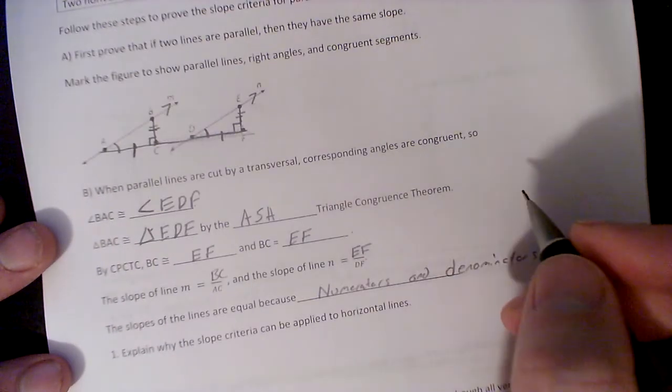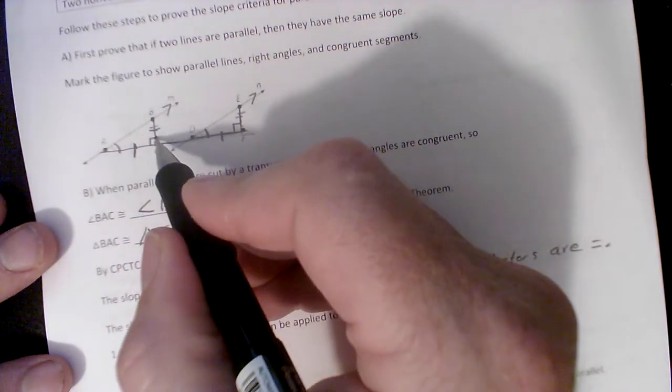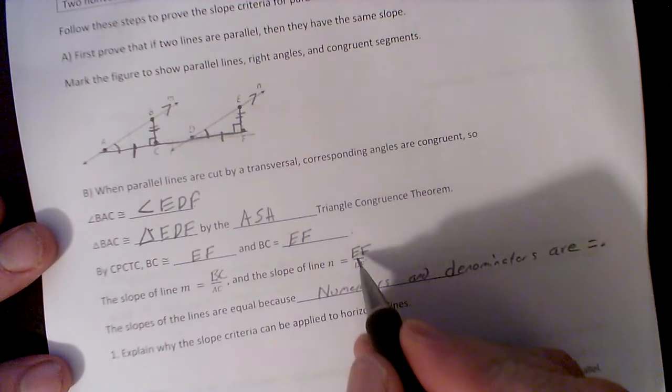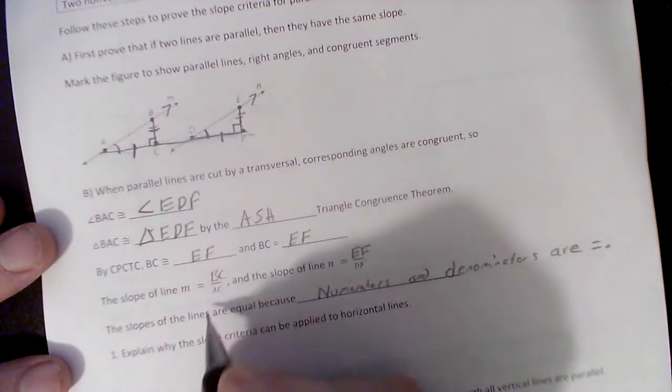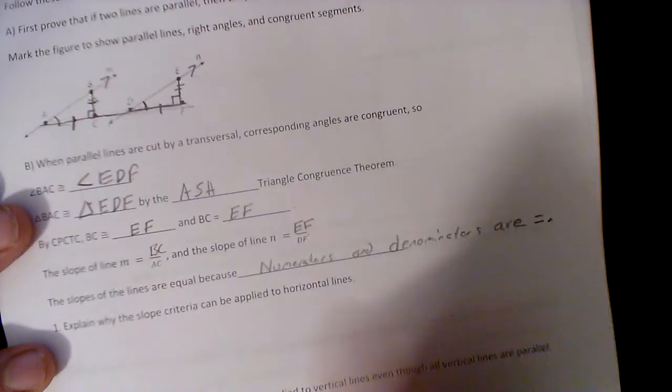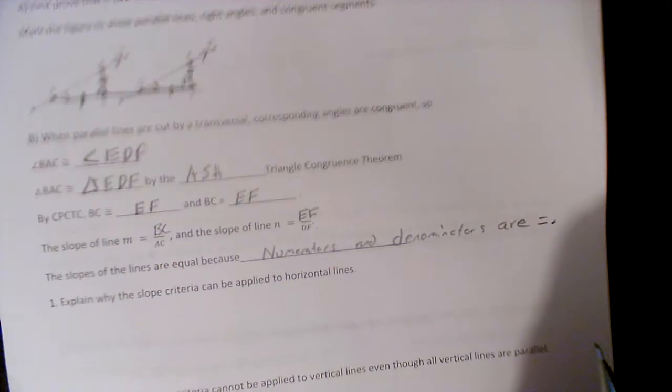Remember what slope is: slope is rise over run. So if this rise is equal to this rise, BC is equal to EF, and this run, AC and DF, are equal to this run, right? AC and DF. Then we know they have the same slope because the numerators and denominators are equal.